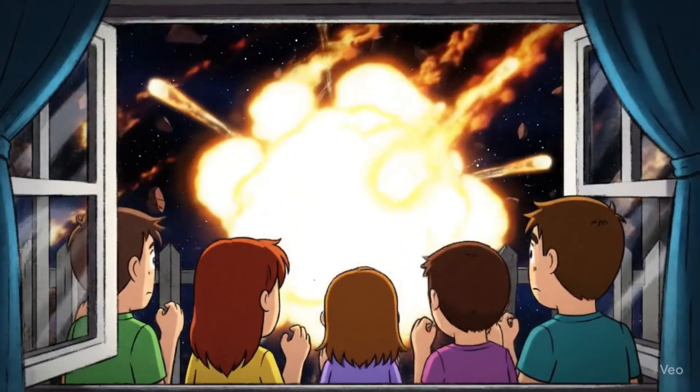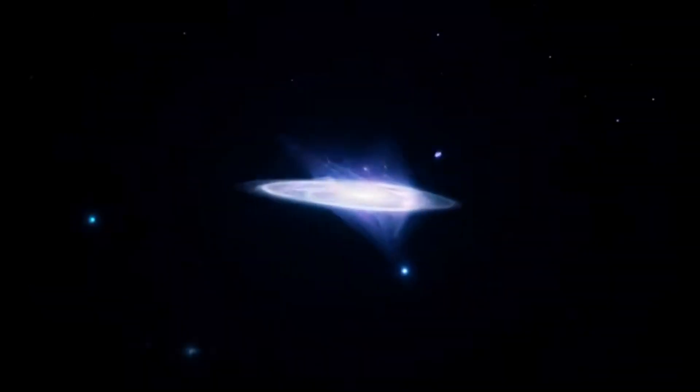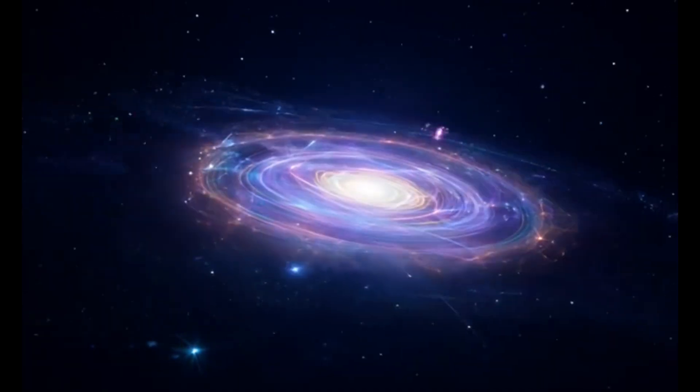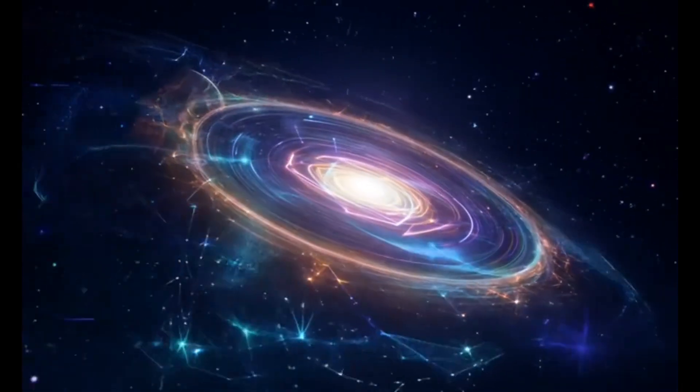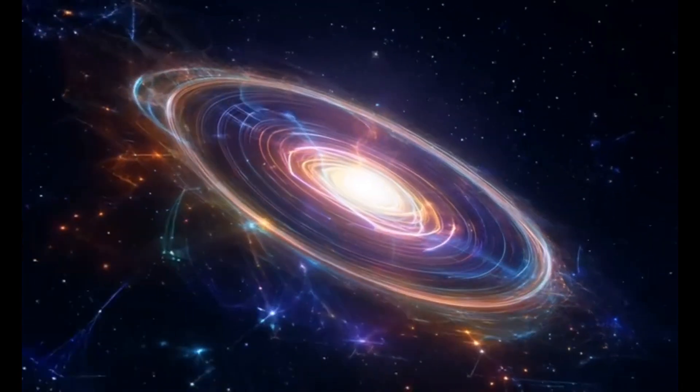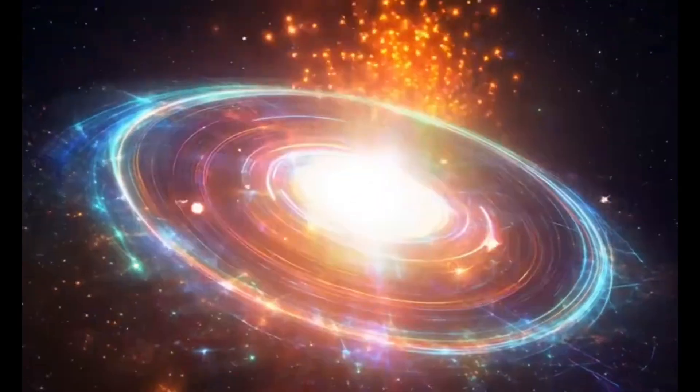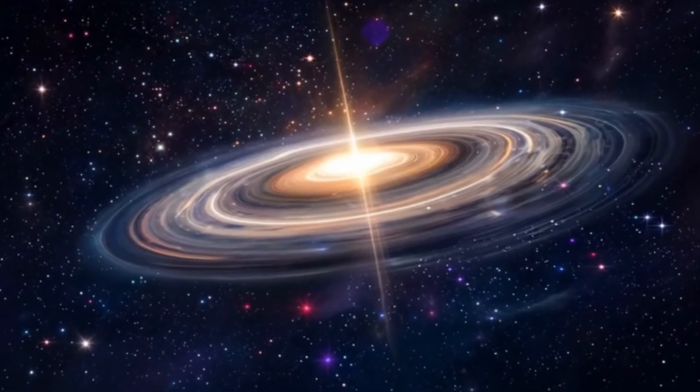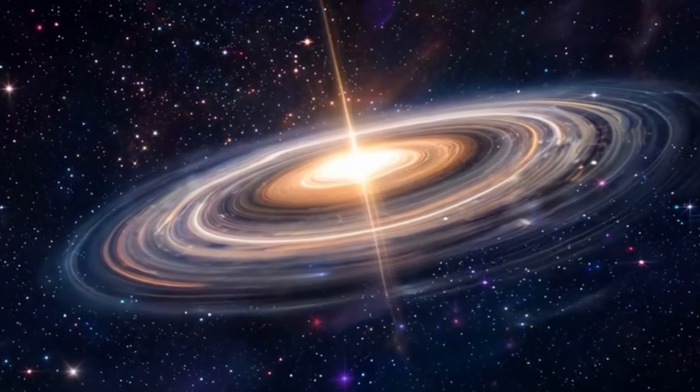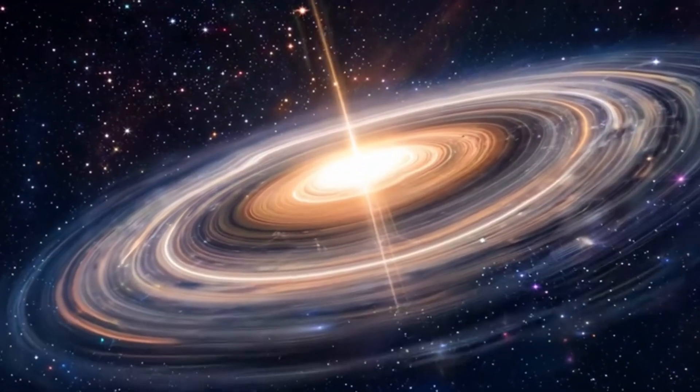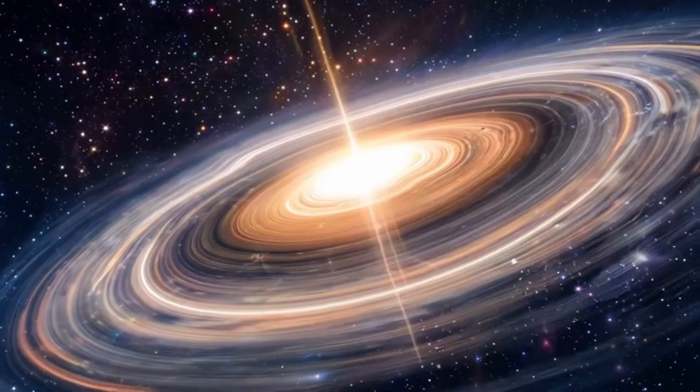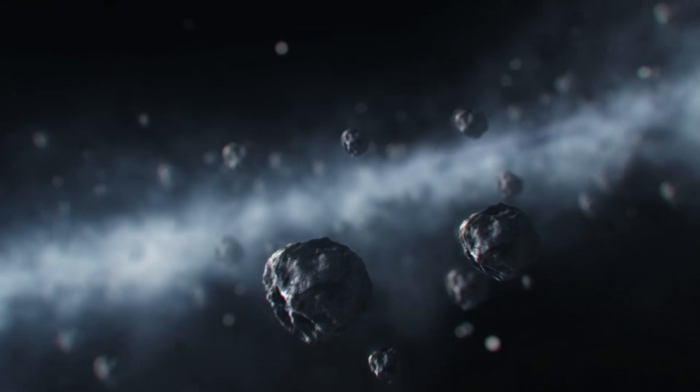But unlike Earth, this exoplanet occupies a category scientists refer to as a sub-Neptune. It is larger than Earth but smaller than Neptune, a classification that challenges our existing frameworks for understanding planetary environments. Unlike the familiar rocky planets of our solar system such as Mercury, Venus, Earth and Mars, K2-18b defies easy comparison.